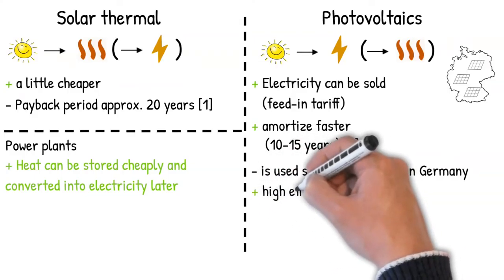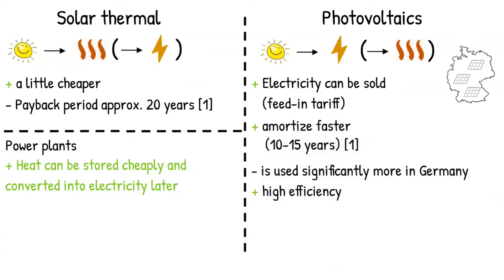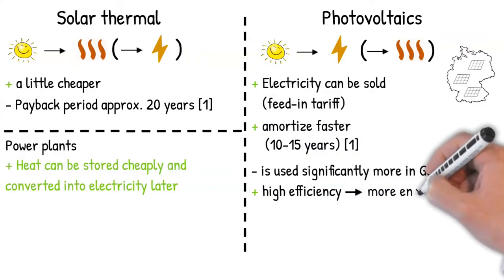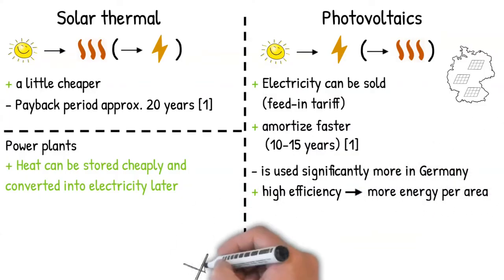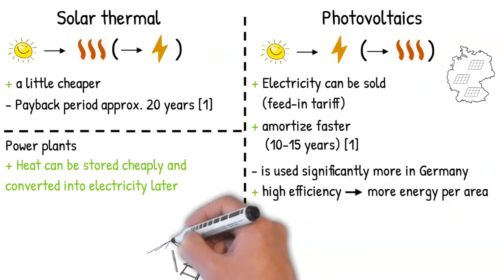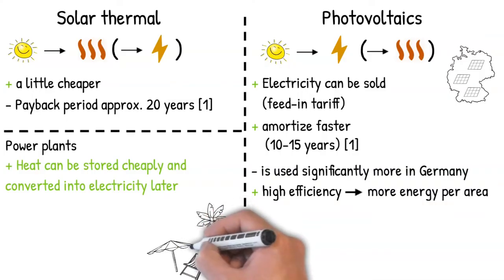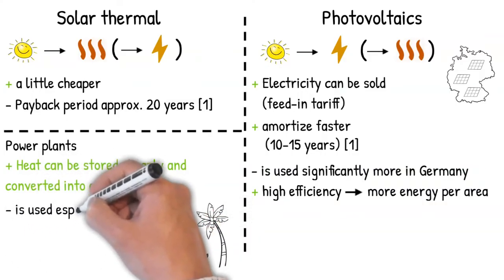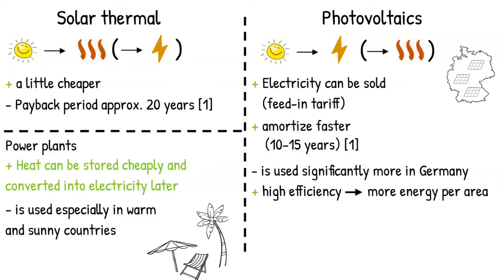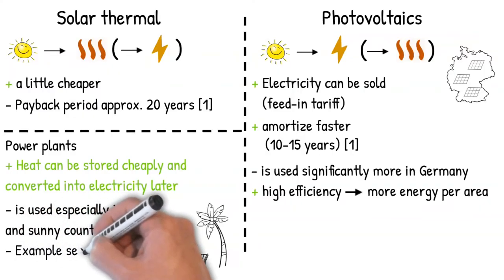One advantage of PV is its efficiency. PV plants can thus supply more electricity per area than solar thermal power plants. Solar thermal power is particularly worthwhile in countries with more hours of sunshine and warmer temperatures. Solar thermal energy is also used much more there. In Morocco, for example, there are large solar thermal power plants.